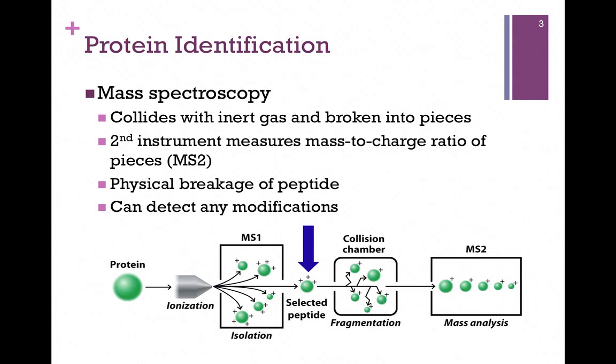From the collision chamber, these fragmented ions are then sent through our second instrument, MS2, and that measures the charge-to-mass ratio of the pieces, and we get a mass analysis. We have different fragments corresponding to the presence of the different amino acids. Each of these fragments is going to differ by a single amino acid, and we'll see how that works to help us determine the sequence.